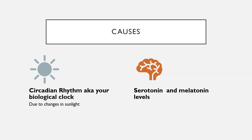Some other factors that may come into play include serotonin and melatonin levels. A drop in serotonin, which is a brain chemical that affects mood, might play a role in SAD. Reduced sunlight can cause a drop in serotonin that may trigger depression. The change in season can also disrupt the balance of the body's levels of melatonin, which plays a role in sleep patterns and mood.